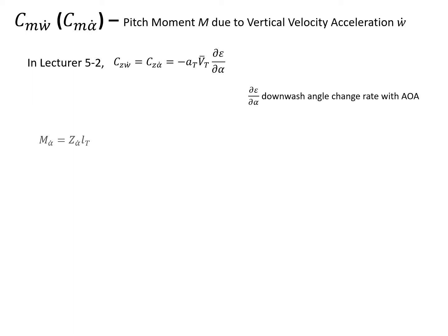Let's see how we can relate CZW dot with CMW dot. Similar to the previous derivative, the pitching moment is a product of the lift force on the elevator times the moment arm of the elevator. So we have M alpha dot equals Z alpha dot times LT, the moment arm.